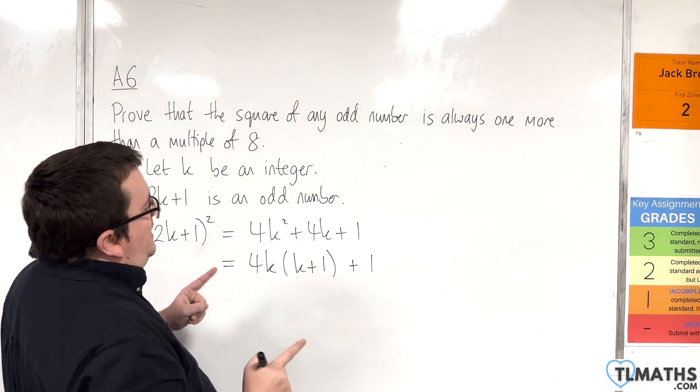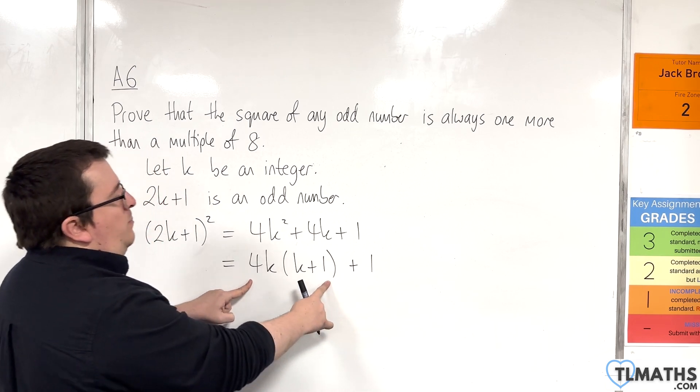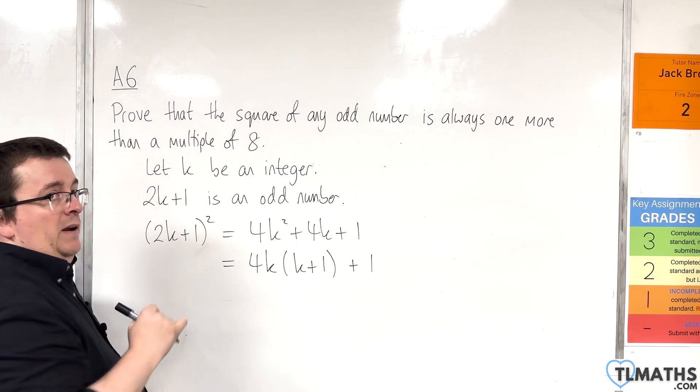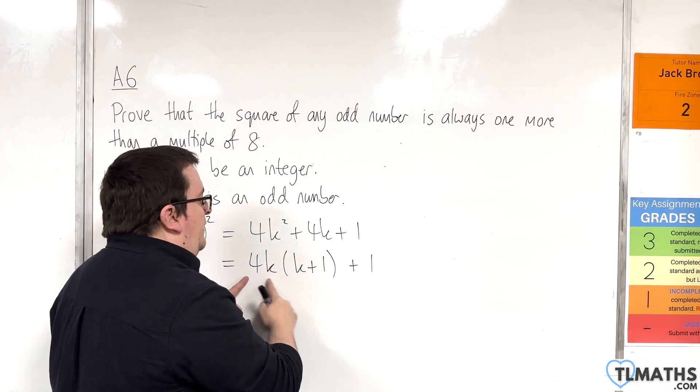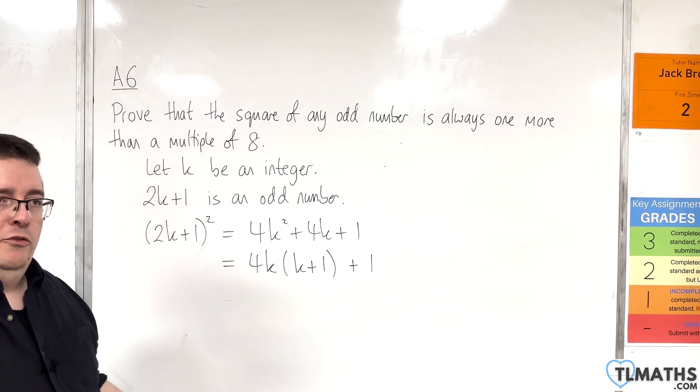Now what I really need to explain here is why 4k(k + 1) is a multiple of 8. And then if I've done that, then this is clearly one more than a multiple of 8.